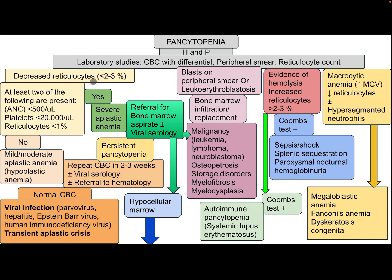If there is decreased reticulocyte count less than 2%, and at least two of the following are present — absolute neutrophil count less than 500, platelet count less than 20,000, or reticulocyte count less than 1% — and none of these criteria are met, this is mild to moderate aplastic anemia or hypoplastic anemia. Repeat complete blood count in 2-3 weeks, with or without viral serology or referral to a hematologist.